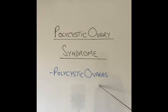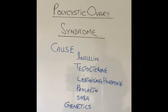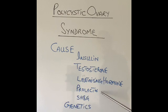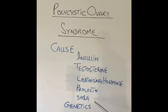The cause of polycystic ovary syndrome remains unknown. However, there is an imbalance in hormone levels in the woman's body: insulin levels are high, testosterone levels are high, luteinizing hormone levels become low, prolactin levels are abnormal, and sex hormone binding globulin is also affected. Nobody knows which is the primary hormone that starts this cascade of abnormal hormones resulting in polycystic ovary syndrome.